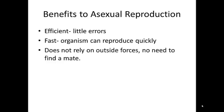Some benefits of asexual reproduction are: first of all, it is very efficient, meaning there's not a lot of errors that happen. Asexual reproduction is just the splitting of an organism into two — it's fast, it's efficient, and it doesn't rely on outside forces.